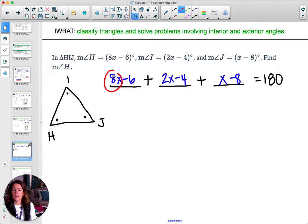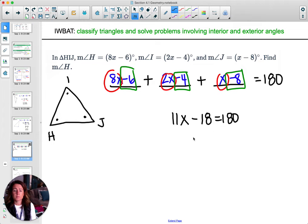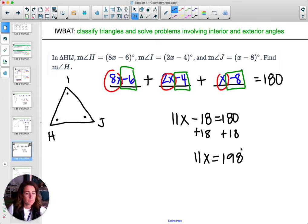Combine your like terms. So you have an 8x, a 2x, and a 1x. So 8 plus 2 is 10 plus 1 is 11x's. You've got negative 6, negative 4, and negative 8. So negative 6 plus negative 4 is negative 10, plus negative 8 is negative 18. Add 18 to both sides. So you get 11x equals 198. Then you'll divide by 11 to both sides. And you'll get x equals 18.